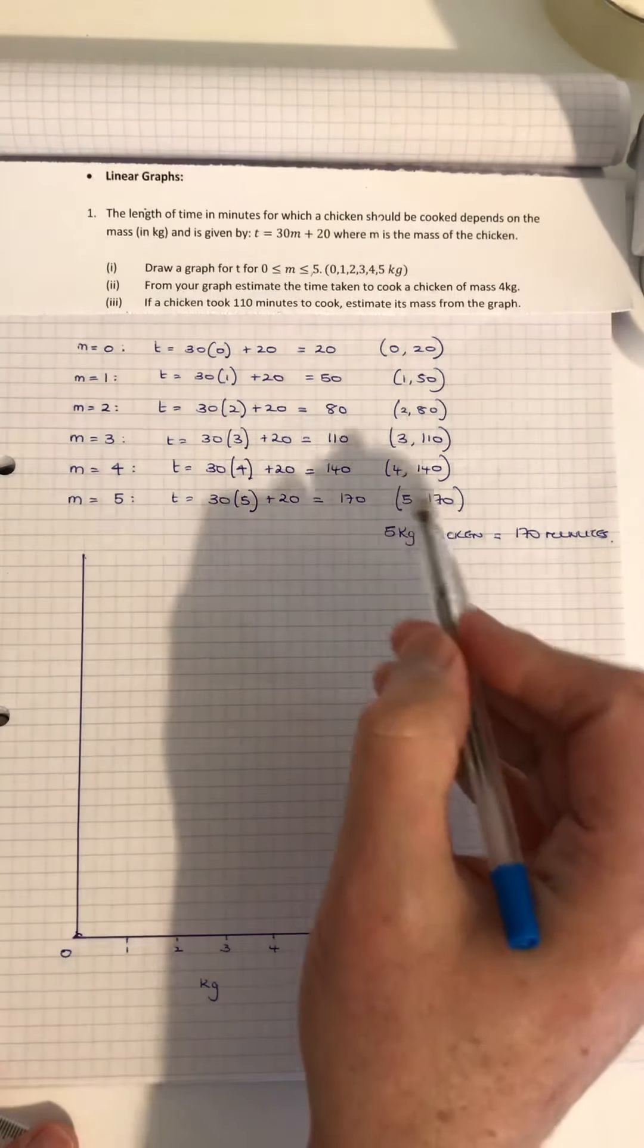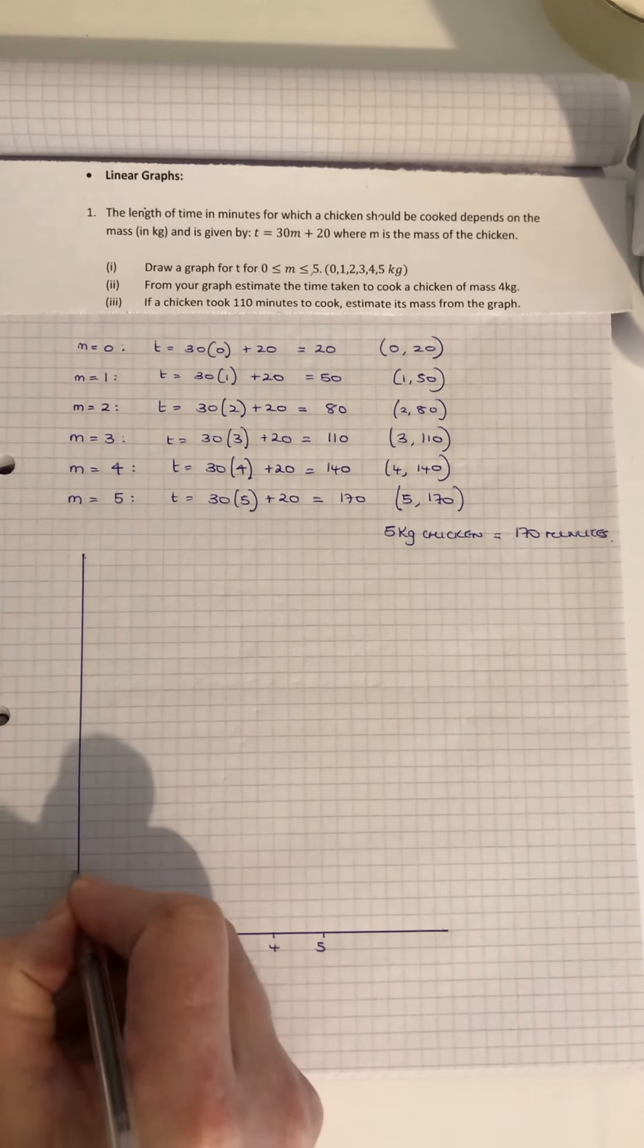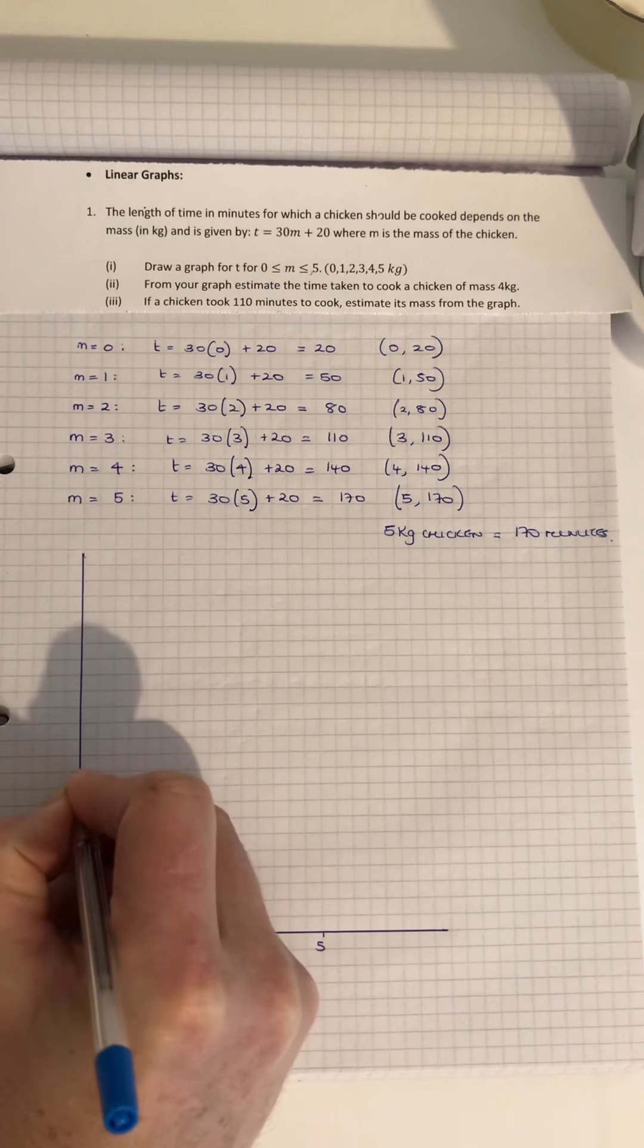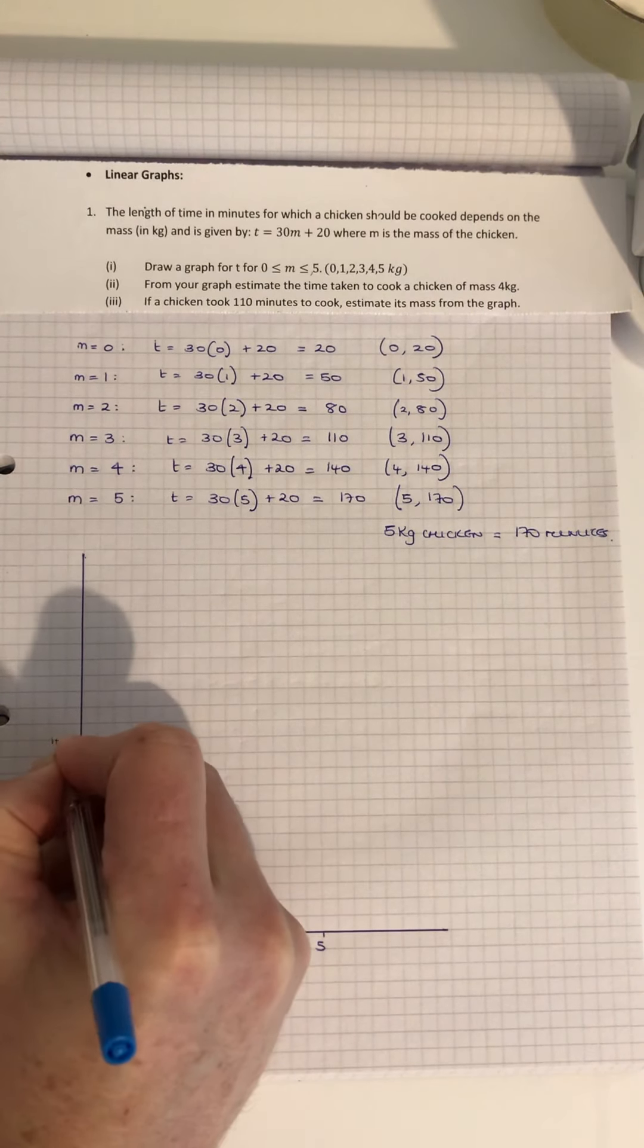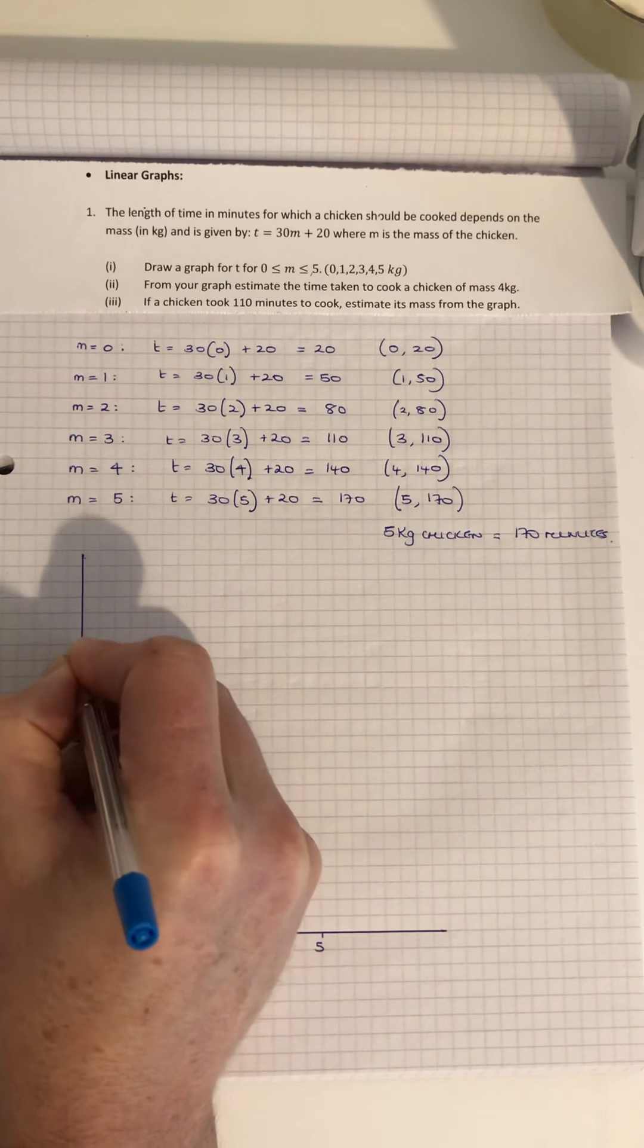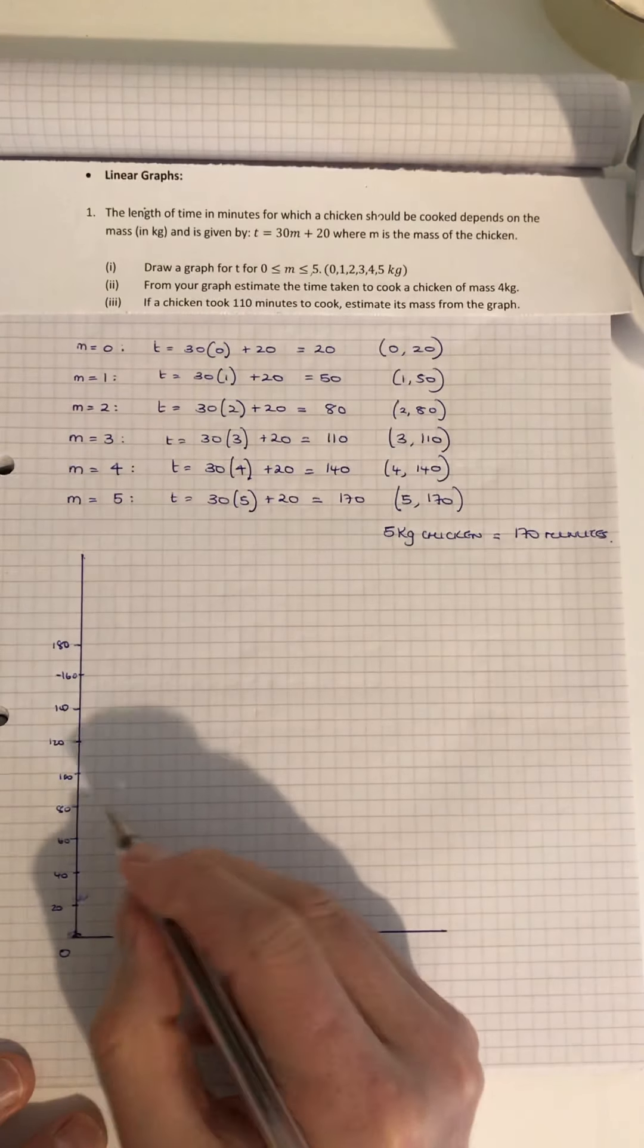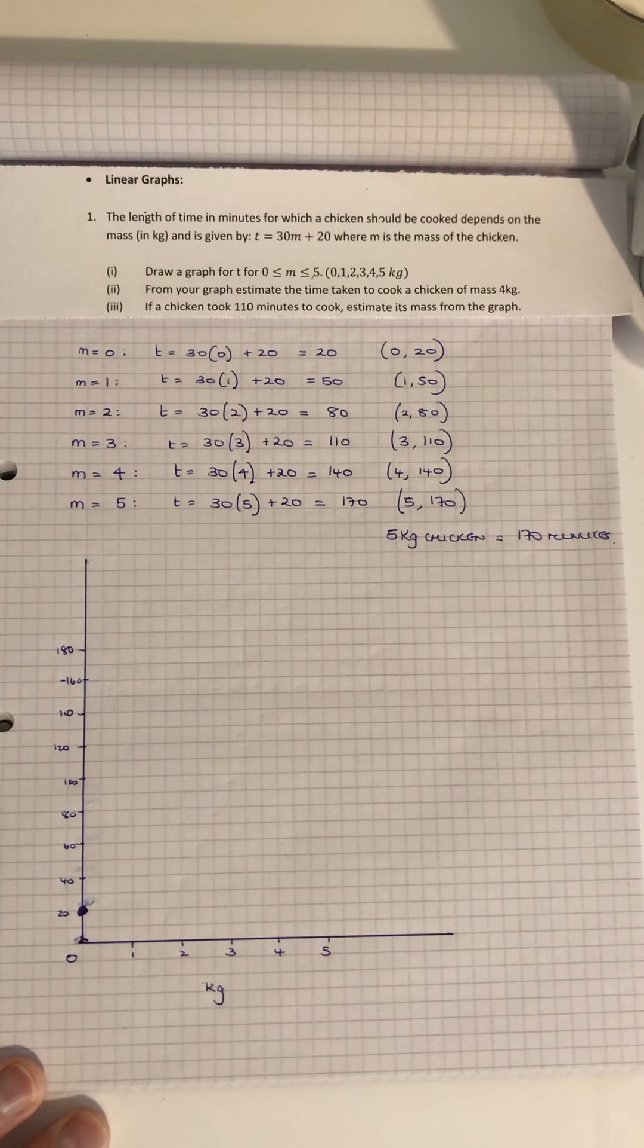I'm going up as far as 170, but I'm going to go 20, 40, 60, 80, 100, 120, 140, 160, 180. At 0, it takes 20 minutes - so if it's less than a kilogram, it's 20 minutes. 1 kg is 50 minutes, so 50 is between 40 and 60. 2 kg is 80 minutes.